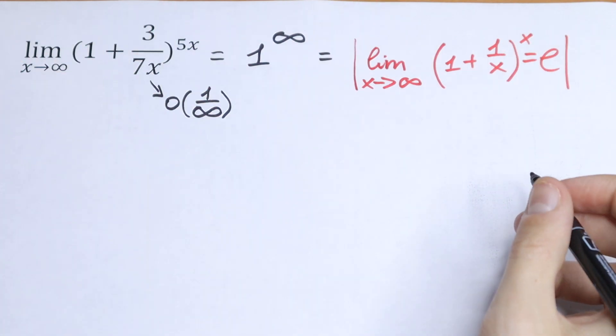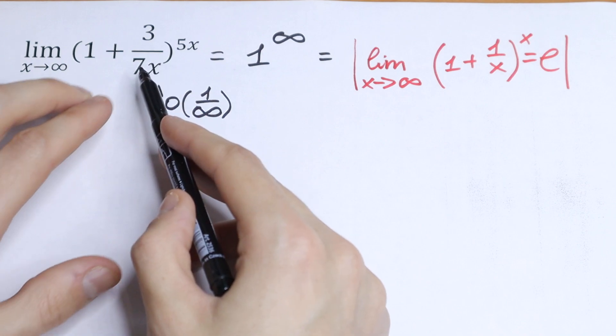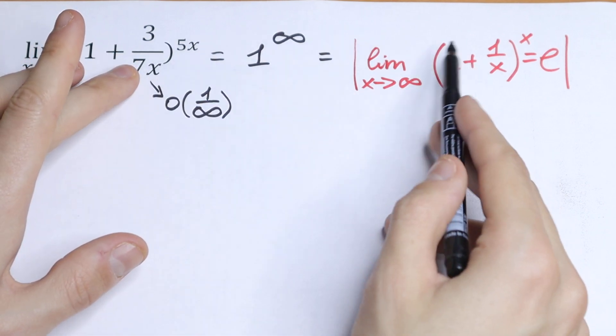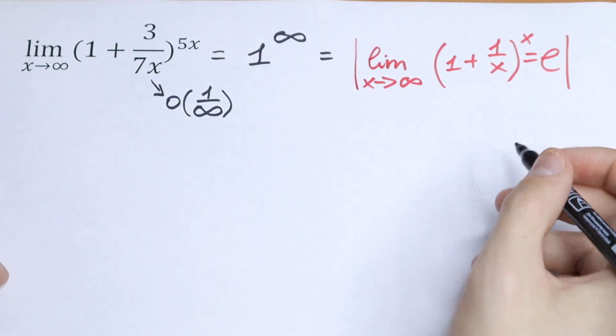We all know this limit. So this is the same as right here. But we need to simplify this to have this limit the same as right here.